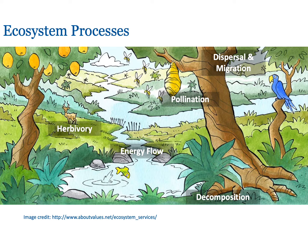Energy flow and transformation is a key ecosystem process that can determine the currency of life in ecosystems. Other ecosystem processes include dispersal and migration, pollination, herbivory, and decomposition. From an agroecology perspective, we might ask: where are nutrients coming from for the agricultural system? Is decomposition happening at a rate that could assist regeneration of plant nutrients? How are the plants being pollinated? How are the weedy plants being dispersed across the landscape?